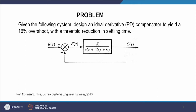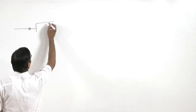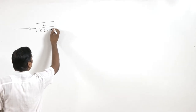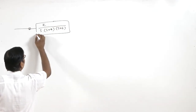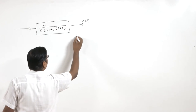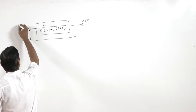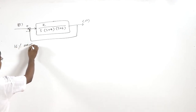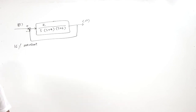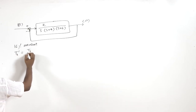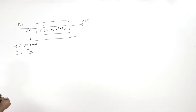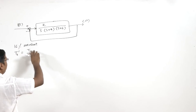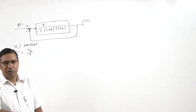We have this plant with unity feedback. We have to design an ideal derivative compensator to yield 16 percent overshoot and a threefold reduction in settling time. A threefold reduction means the new settling time T_s' should equal T_s divided by 3. So this system has some settling time and we have to design it so that the settling time is reduced by a factor of 3.